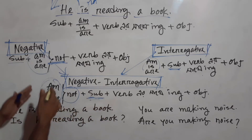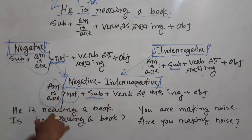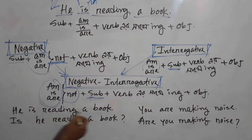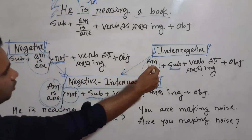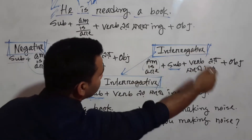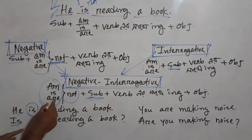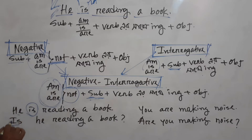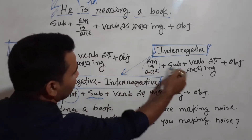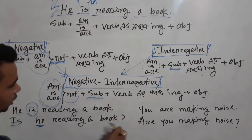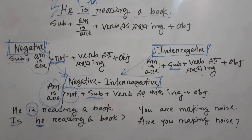In the interrogative sentence, the auxiliary comes before the subject. For example, 'I am using this' becomes interrogative by placing the auxiliary before the subject: Auxiliary + Subject + Verb+ING + Object.